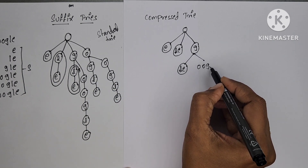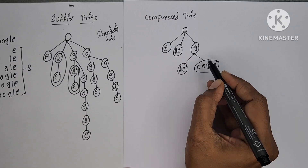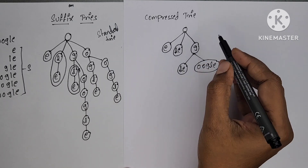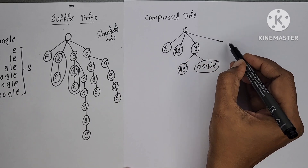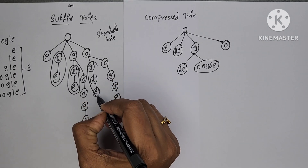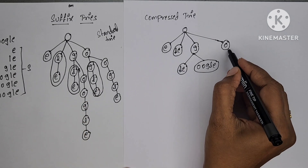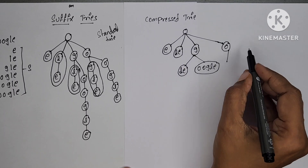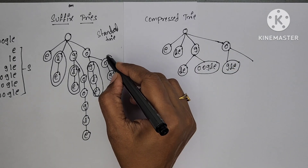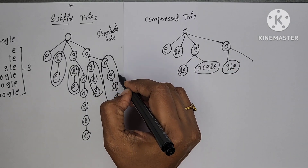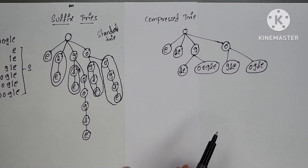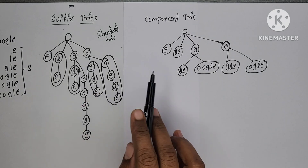For O to E also, there is only one path — O, O, G, L, E — we can combine. And next, from O to leaf node, there are two paths, so you cannot combine. From G to E, there is only one path — we can combine. Like this, we have to compress the number of levels so that we can easily search strings — search suffixes of a given string. So this is about compressed trie.